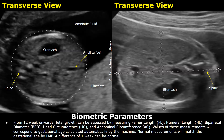Towards the end of the first trimester and the start of the second trimester, from 12 weeks onwards, fetal growth is assessed by measuring biometric parameters which include femur length, humeral length, biparietal diameter, head circumference, and abdominal circumference. Measurements of these parameters correspond to the gestational age of the fetus, automatically calculated by the machine. Normal measurements will align with the gestational age by LMP or CRL.